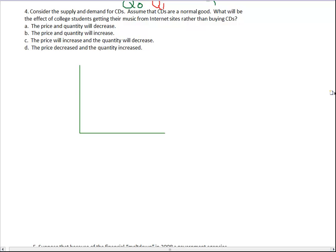Consider the supply and demand for CDs. Assume that CDs are a normal good. What will be the effect of college students getting their music from internet sites rather than buying CDs? Well, it sounds like college students, instead of buying the CDs, are going to get more from internet sites. So let's start out at our original equilibrium. And then some college students say, I'm not going to buy CDs. I'm going to download. Which means I would expect CD prices should go down. But also we see fewer CDs being sold. So demand went down, price went down, quantity went down.